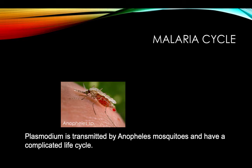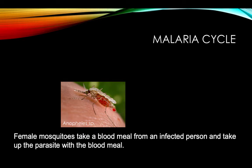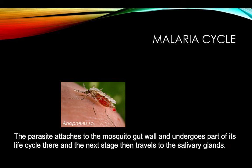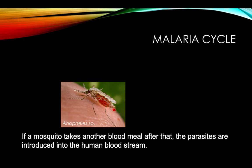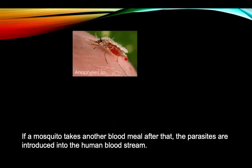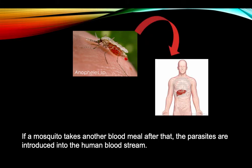Plasmodium is transmitted by Anopheles mosquitoes and has a complicated life cycle. Female mosquitoes take a blood meal from an infected person and take up the parasite with the blood meal. The parasite attaches to the mosquito gut wall and undergoes part of its life cycle there, and the next stage then travels to the salivary glands. If a mosquito takes another blood meal after that, the parasites are introduced into the human bloodstream.